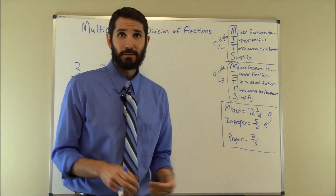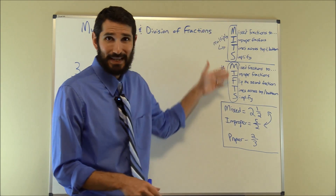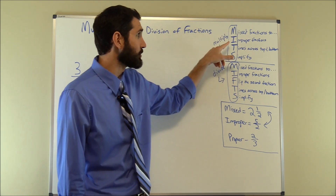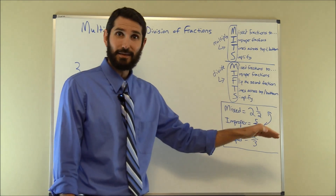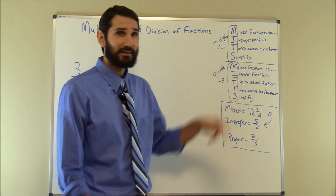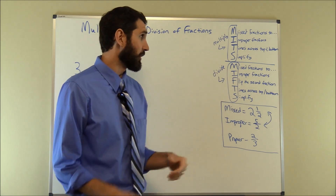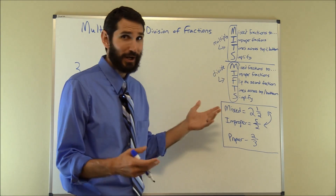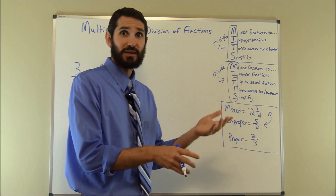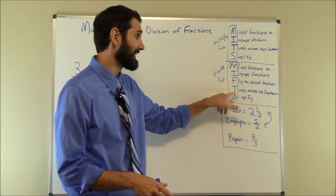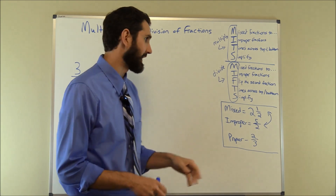I'm going to give you a couple of different mnemonics to help you work these. The first one is for when you multiply fractions and the mnemonic is MITS. MITS stands for: turn mixed fractions into improper fractions — that's M and I. Then for T, you times across the top and the bottom. Then finally S, you simplify. When you divide, there's one extra step: convert mixed fractions to improper fractions, then flip the second fraction, change the divide to multiply, then times across and simplify.